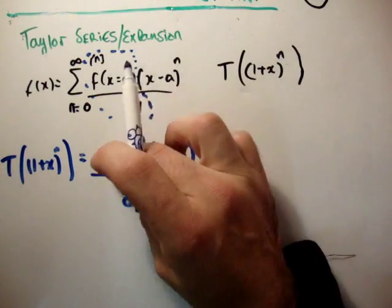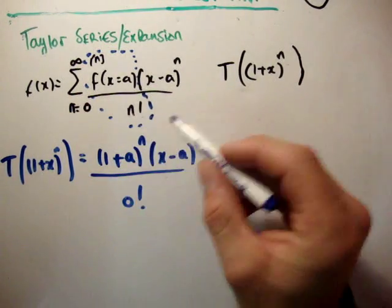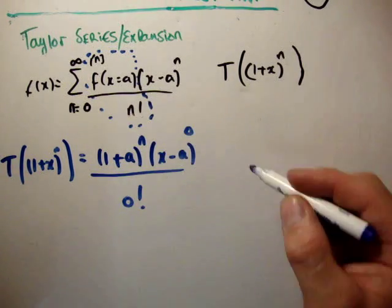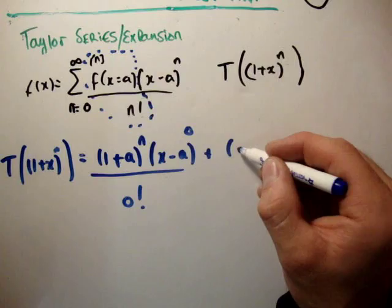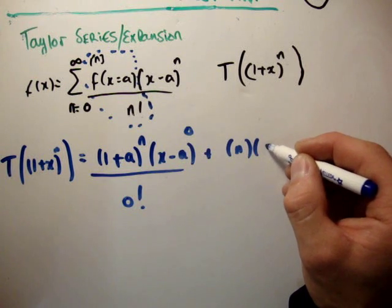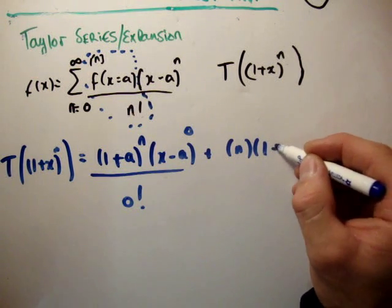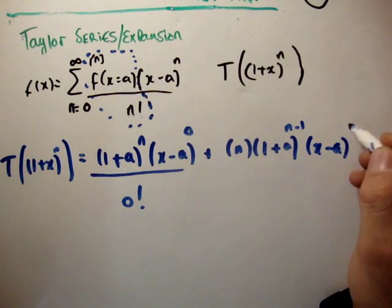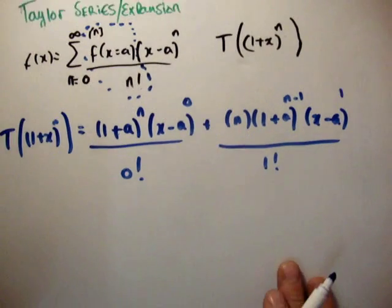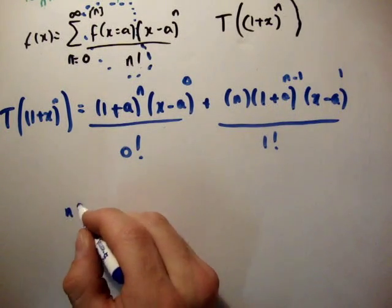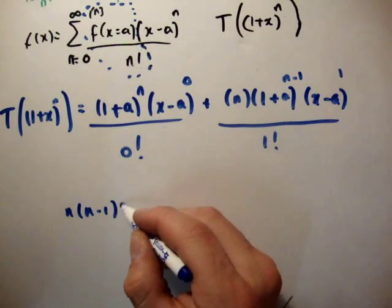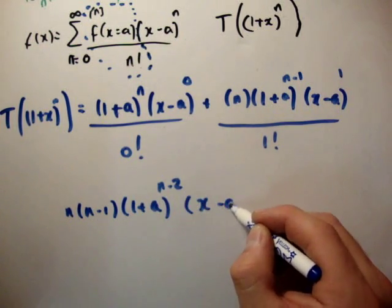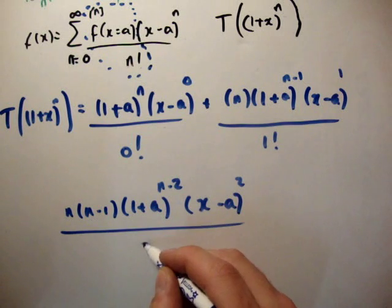This should be 1 plus a, because this is our function here. Okay, next we have n, then we had 1 plus a to the n minus 1, x minus a to the power of 1, divided by 1 factorial. Then we had n, n minus 1, 1 plus a to the n minus 2, x minus a to the power of 2, divided by 2 factorial.